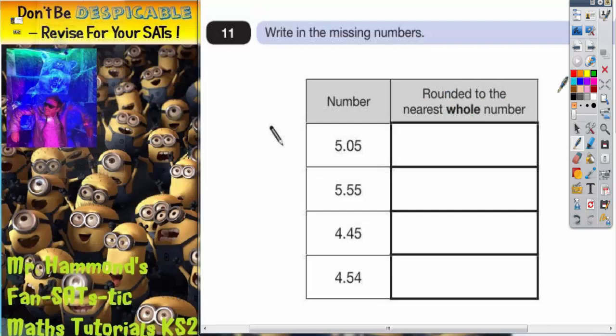So the first thing we've got to do is to decide which is the nearest whole number. If we look on here we can think of this as being our units in this column, then we've got our tenths and then our hundredths. So thinking about place value here, the whole number is going to be the units part here.